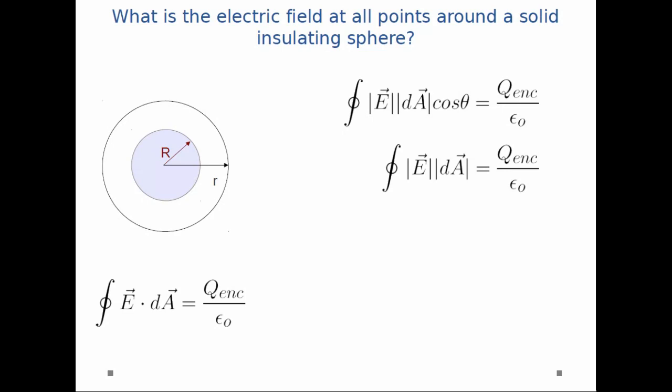We note that the electric field is constant over the entire Gaussian surface. So we can pull it out of the integral. And the integral dA is just the surface area of my sphere.